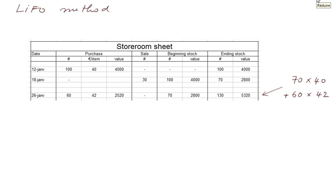Continuing the LIFO method: on the 26th of January, I purchase 60 more items, but this time the purchasing price is 42 euros. The beginning stock was 70 items at 2,800 euros. Therefore the ending stock is 70 plus 60 equals 130 items, and the value of the ending stock is 5,320 euros — that is the sum of 70 items multiplied by 40 plus 60 items multiplied by 42.